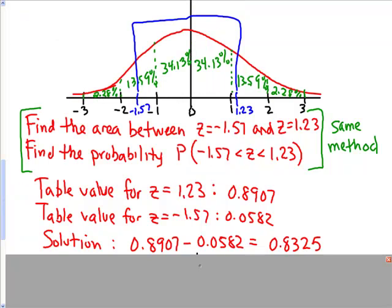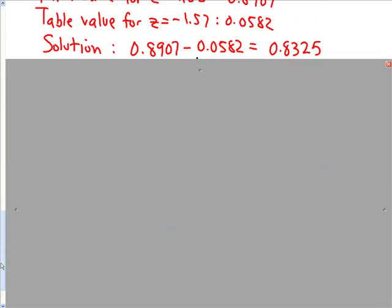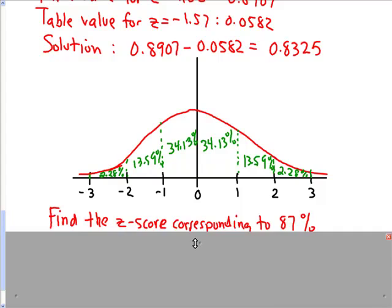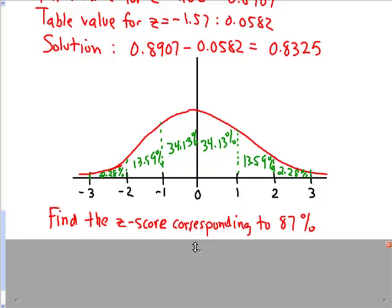Now the final thing I want to show you, and the thing that's most frustrating for statistics students, is finding a z-score that corresponds to a particular percentage. So here's my example. Find the z-score corresponding to 87%. Well, let's see where is that on the curve. We know that the mean is at 50. 1 is about 84%. So 87% is going to be right in here.